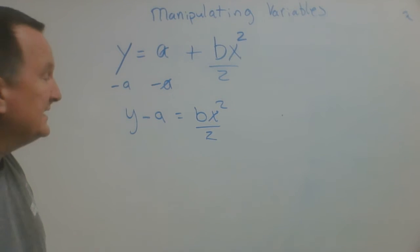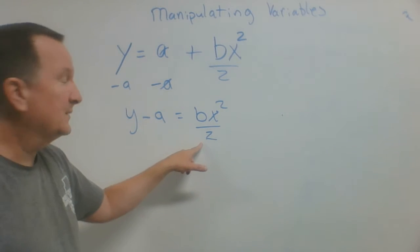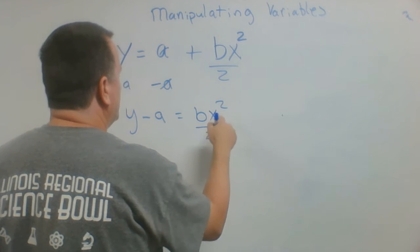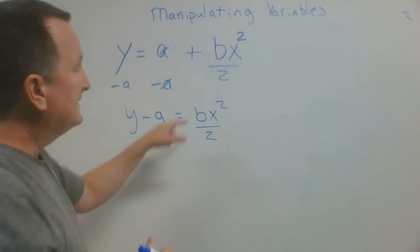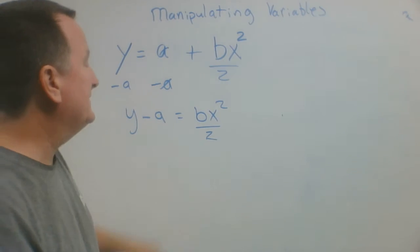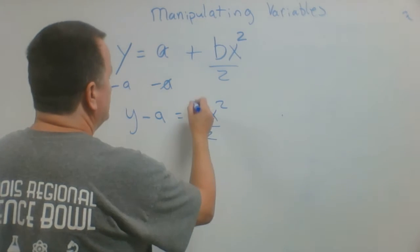Now I need to get rid of the 2 on the bottom. I want to isolate x. x is what I'm trying to isolate here. So if this term is divided by 2, to get rid of that, I need to multiply both sides by 2.